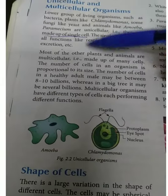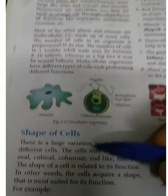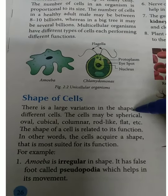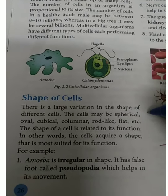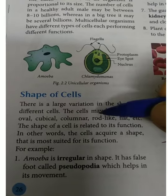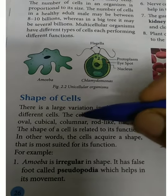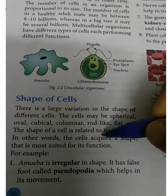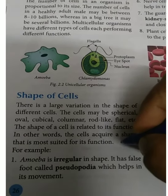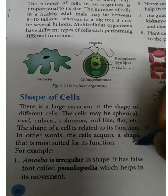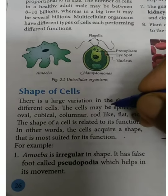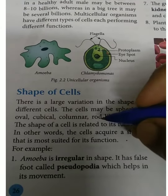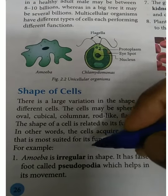Now we will read about the shape of the cell. There is large variation in the shape of different cells. A cell may be spherical, oval, cubical, columnar, rod-like, or flat. The shape of a cell is related to its function — the cell acquires a shape that is more suited for performing its function.